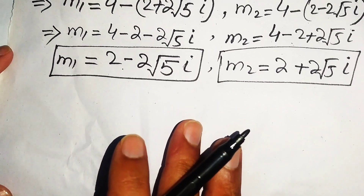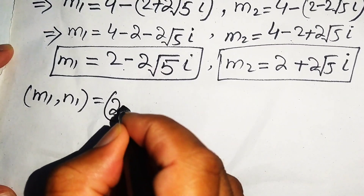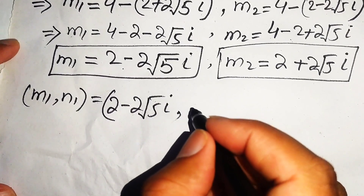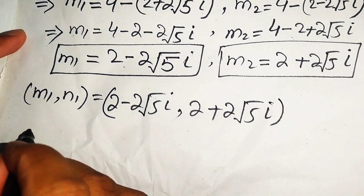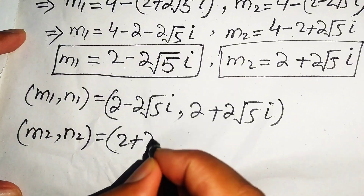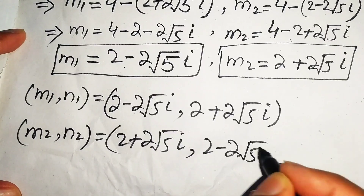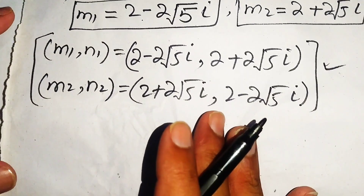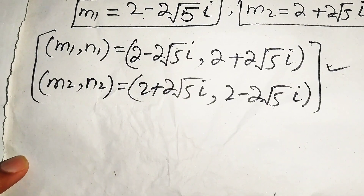Finally, the two solution sets are: (m1, n1) equals (2 minus 2 root 5 i, 2 plus 2 root 5 i), and (m2, n2) equals (2 plus 2 root 5 i, 2 minus 2 root 5 i). These are the final answers. Thank you for watching — please subscribe for more videos.